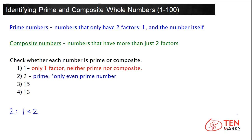Now let's take a look at the third number, 15. Think: what numbers can be multiplied together to get 15? 1 and 15 are factors, because 1 and the number itself are factors of every whole number — 1 times 15 equals 15. Let's check for other factors. Is 2 a factor of 15? Let's try multiplying 2 by a number to see if we can get 15.